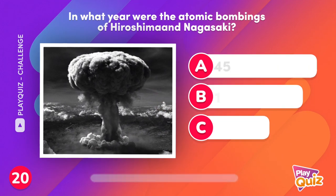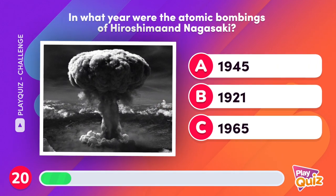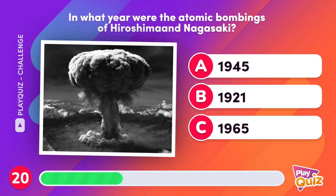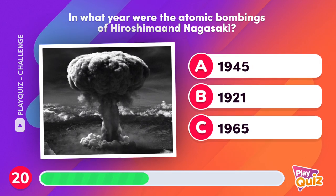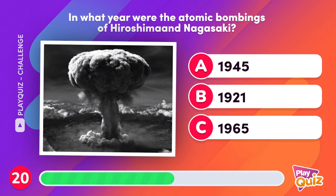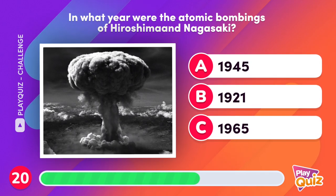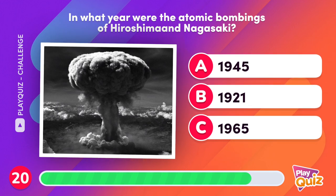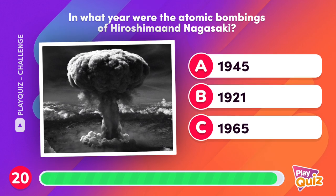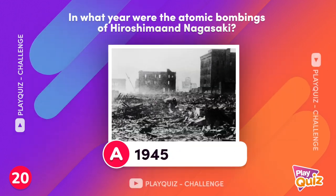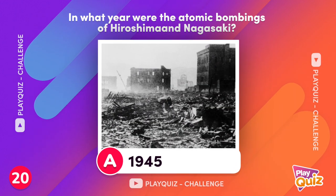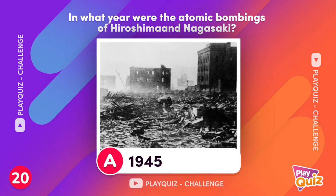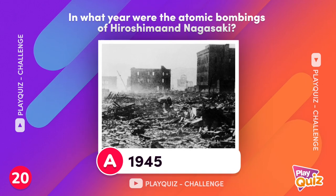In what year were the atomic bombings of Hiroshima and Nagasaki? In August 1945, ordered by the President of the United States, Harry S. Truman.